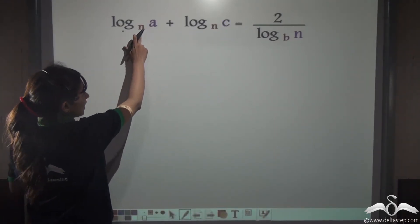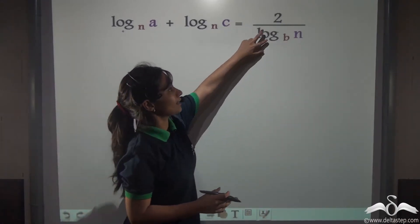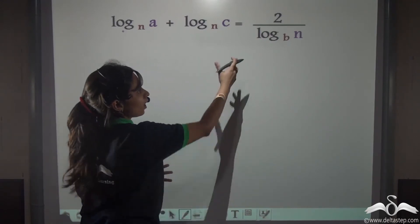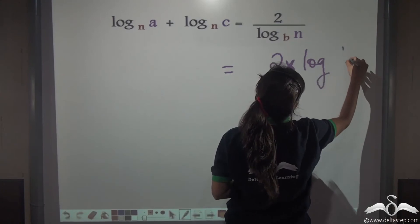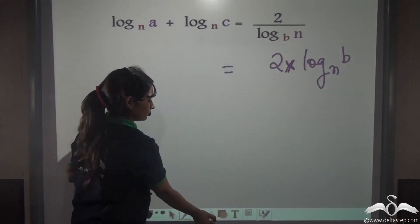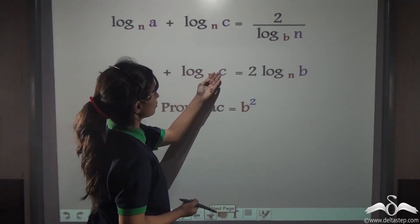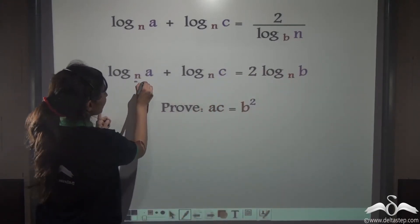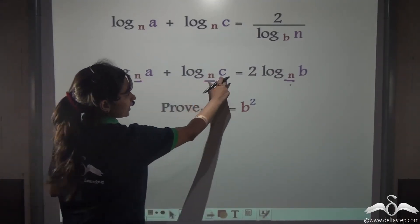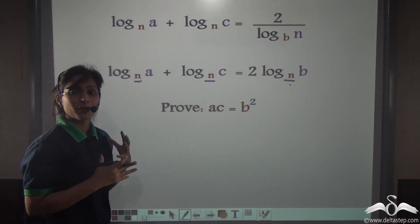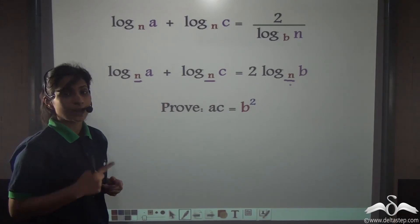Suppose I tell you that log A to the base N plus log C to the base N equals 2 by log N to the base B. Can you also apply the reciprocal formula here? Obviously, you can. The 2 by log N to the base B term, after applying the reciprocal formula, becomes 2 log B to the base N — just interchange the places. So now: log A to the base N plus log C to the base N equals 2 log B to the base N. All the bases are now the same. Prove that AC equals B².